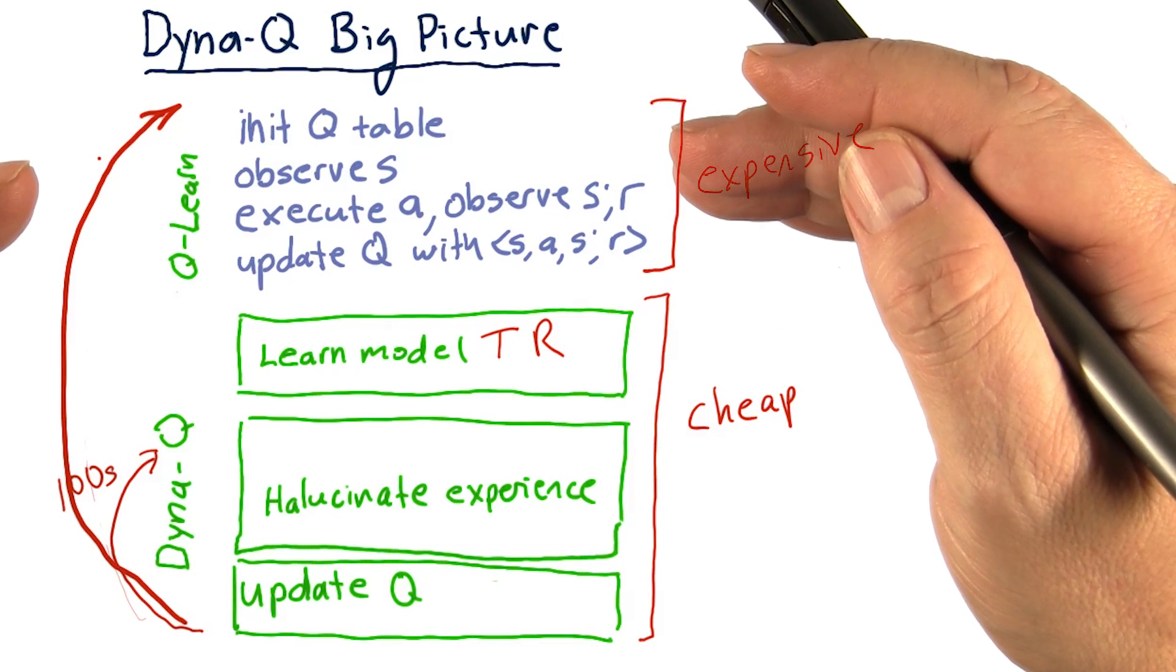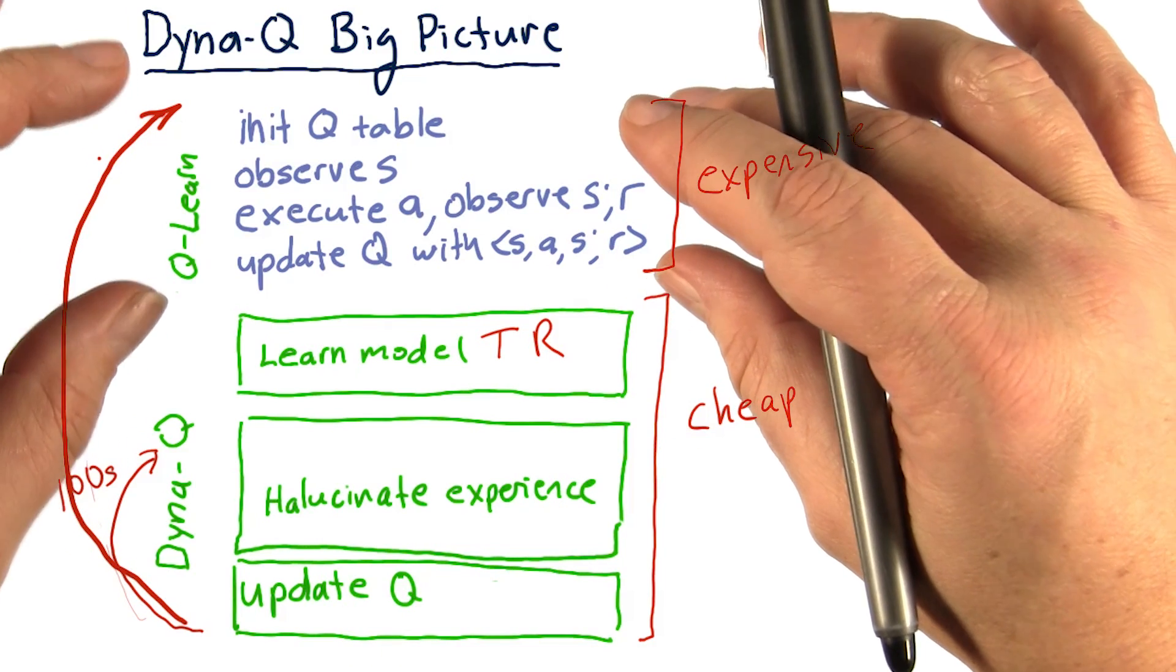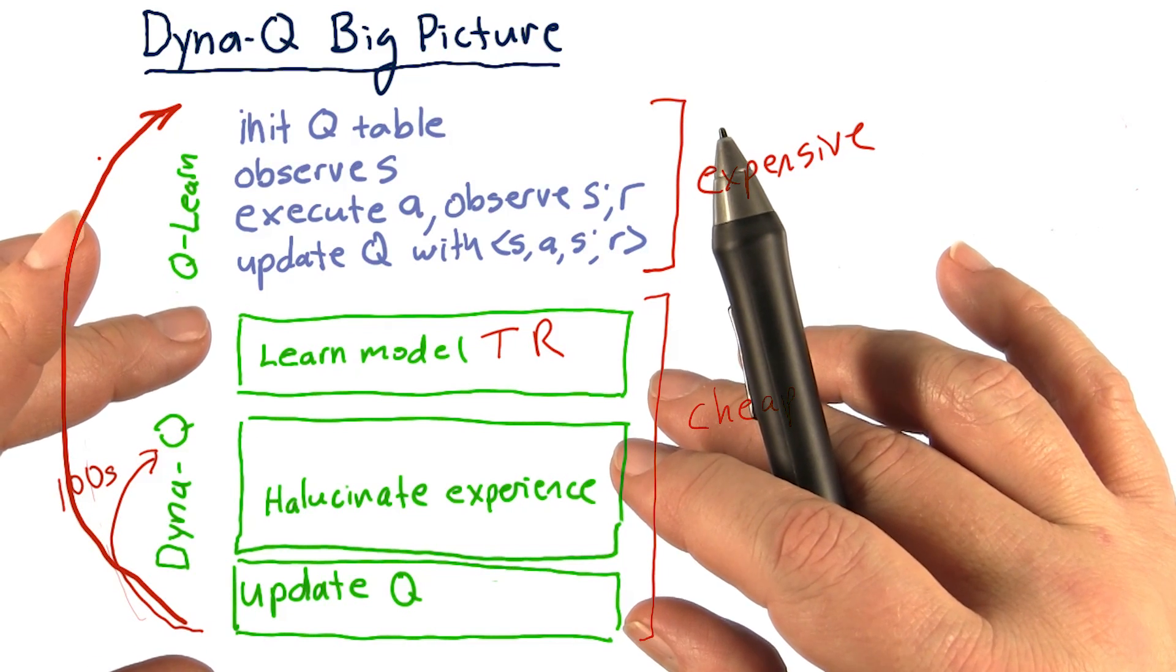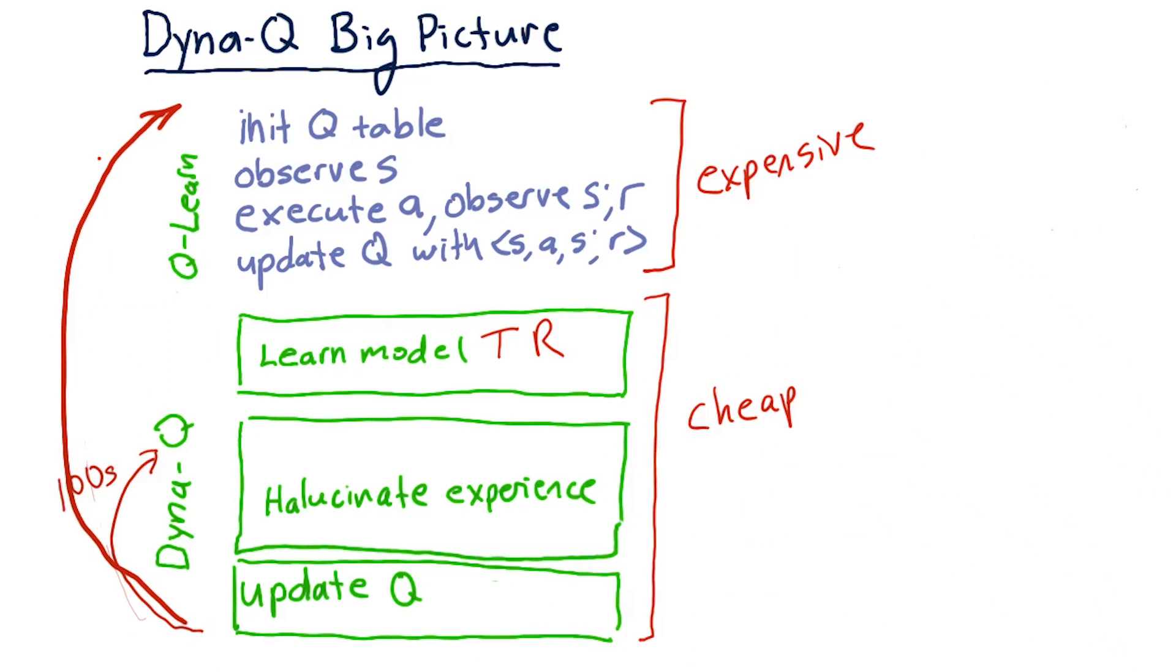The key thing here is that for each experience with the real world, we have maybe 100 or 200 updates of our model here. Let's look at each of these components in a little more detail now.